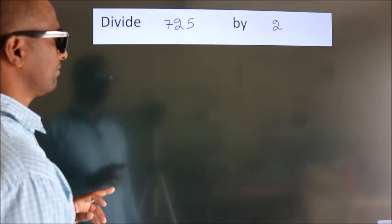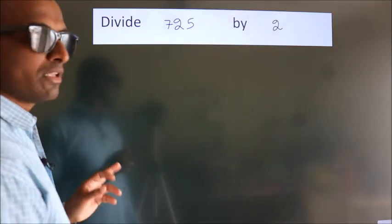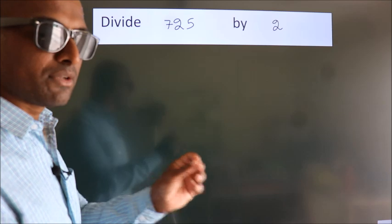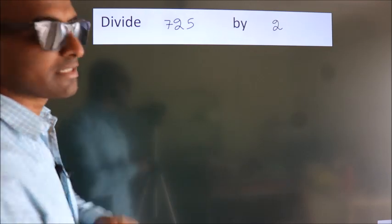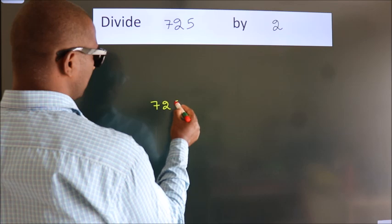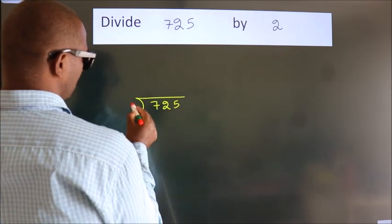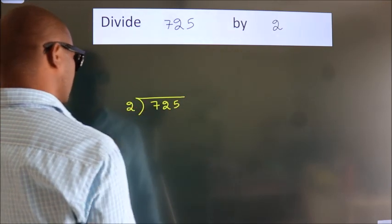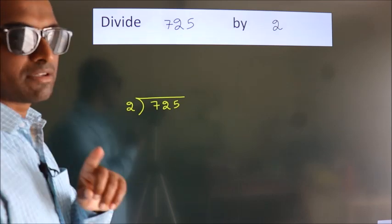Divide 725 by 2. To do this division, we should frame it in this way. 725 here, 2 here. This is your step 1.